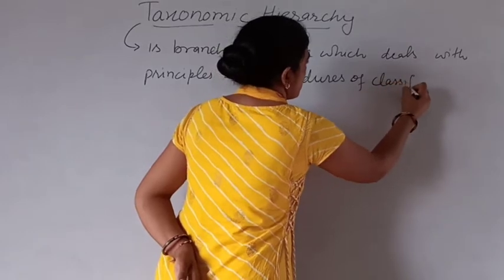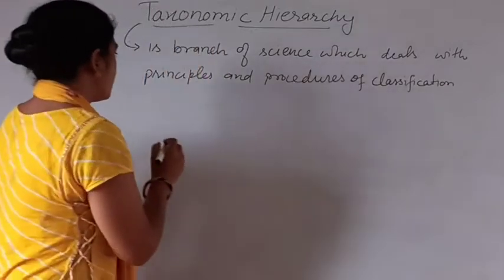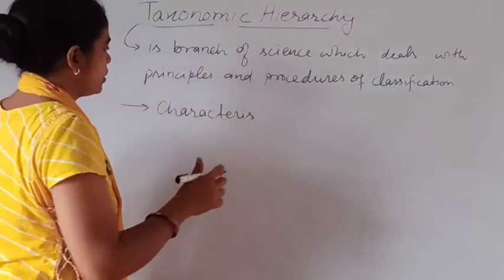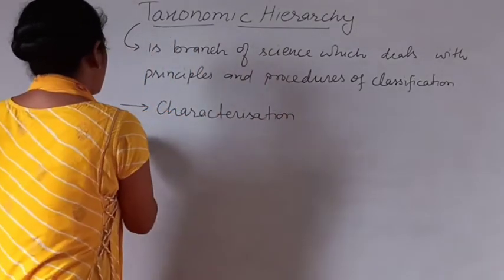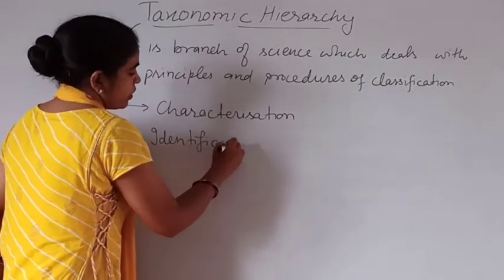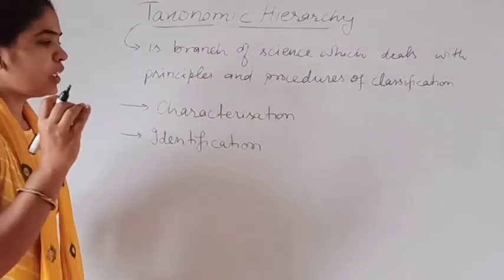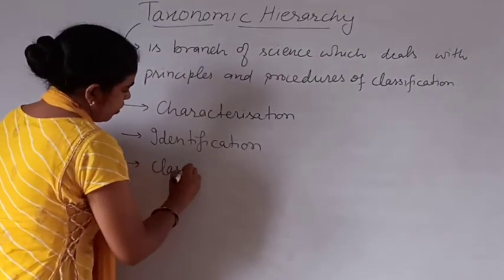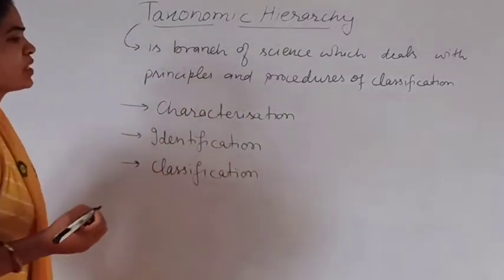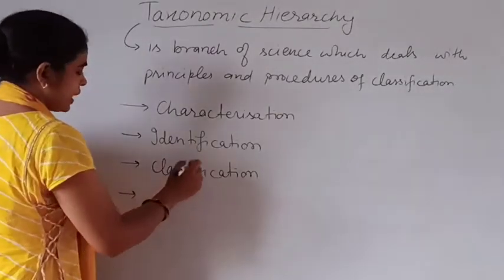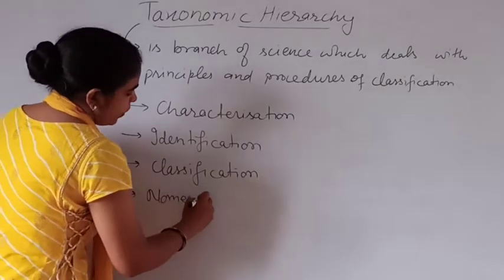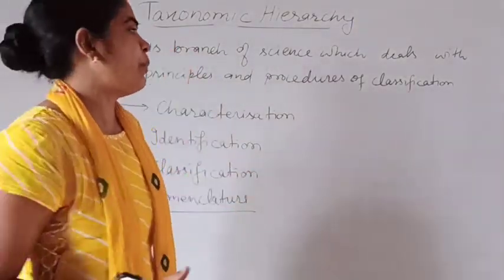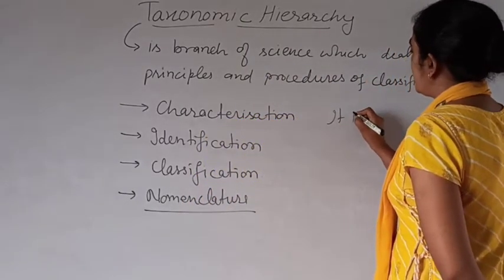Taxonomy includes characterization — first we observe the organism, then we characterize it, then identification: we identify that organism and assign it a category or place in the classification. After identification, classification of that particular organism is done. Then after classification, nomenclature is done — a scientific name of that organism is given. So classification is not a single step process but includes a large number of steps.